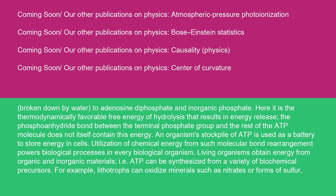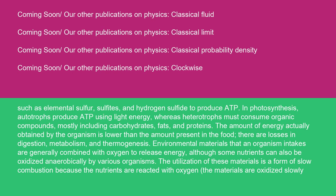Utilization of chemical energy from such molecular bond rearrangement powers biological processes in every biological organism. Living organisms obtain energy from organic and inorganic materials; ADP can be synthesized from a variety of biochemical precursors. For example, lithotrophs can oxidize minerals such as nitrates or forms of sulfur — such as elemental sulfur, sulfites, and hydrogen sulfide — to produce ADP.